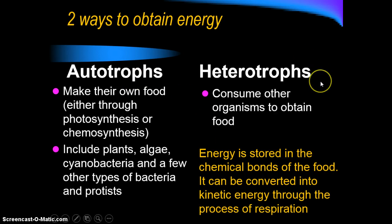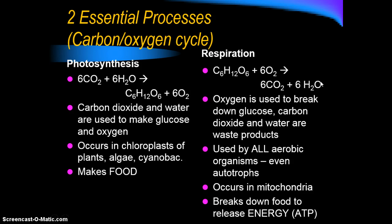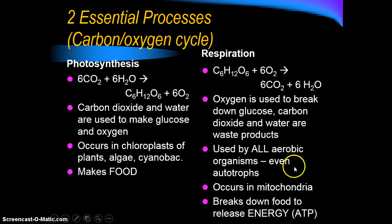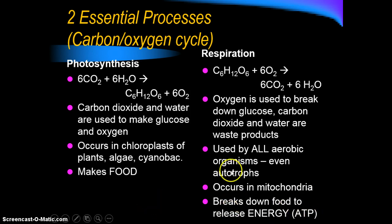Energy can be converted into kinetic energy through the process of respiration, so both autotrophs and heterotrophs have to do respiration. There are two essential processes that make up what we call a carbon-oxygen cycle. Photosynthesis takes carbon dioxide and water to make glucose and oxygen, occurring in the chloroplasts of plants, algae, or cyanobacteria. The opposite process, respiration, takes glucose and uses oxygen to break it down, releasing carbon dioxide and water as waste. This usually happens in the mitochondria, releasing energy as ATP.